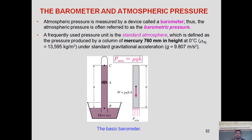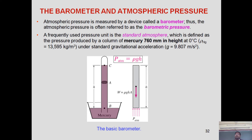Next is the barometer and atmospheric pressure. A barometer is a device that measures atmospheric pressure. Atmospheric pressure is therefore often referred to as barometric pressure. The atmospheric pressure is represented by the rise of mercury by 760 mm at 0°C. If we convert that height of mercury into pressure by multiplying with the density of mercury — which is 13.6 times the density of water — using ρgh, we get the absolute atmospheric pressure. So atmospheric pressure equals 760 mm of mercury.